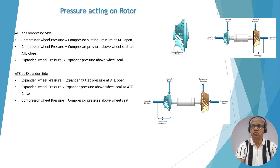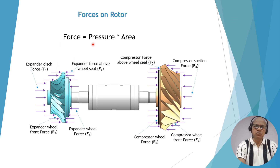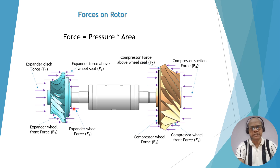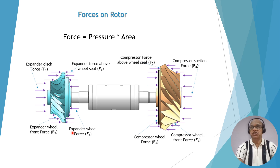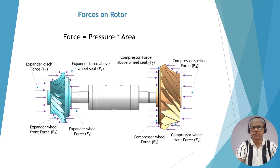Now you understand why we need to consider four pressures for the expander-compressor rotor. Since pressure is varying, the forces will also vary. The forces are: expander discharge pressure force, curve area pressure force, wheel seal area pressure force above the wheel seal, and wheel pressure force below the wheel seal — and similarly on the compressor side. The expander wheel force changes as pressure changes when the ATE valve is installed, and this is how axial thrust is managed by the ATE.